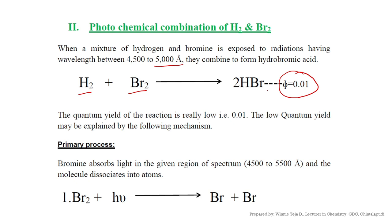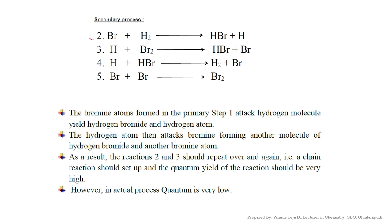Formation of HCl follows a chain mechanism, but formation of HBr does not. In the primary process for HBr formation, one bromine molecule absorbs one quantum of light radiation and gives two bromine atoms. Then in the secondary process, four different steps are possible. In step 2, the bromine atom reacts with a hydrogen molecule and gives HBr and a hydrogen atom. In step 3, that hydrogen atom reacts with a bromine molecule and forms a second HBr molecule and a bromine atom.